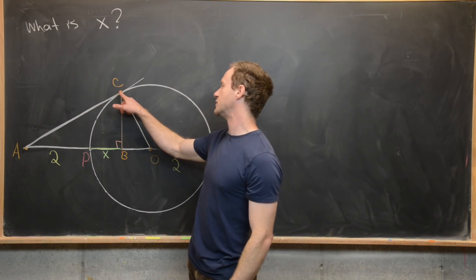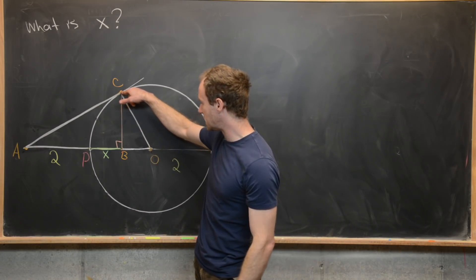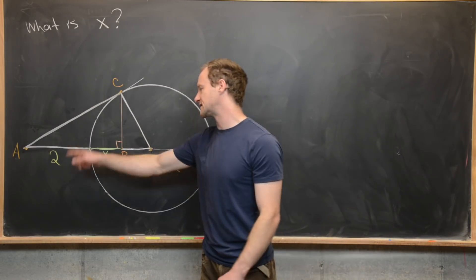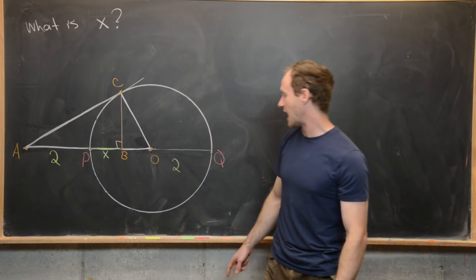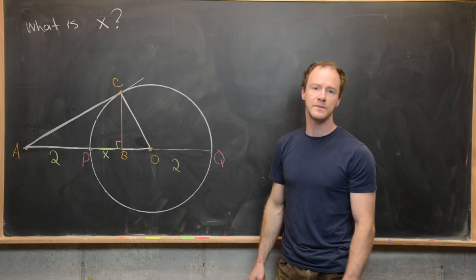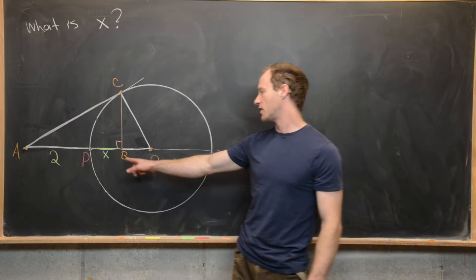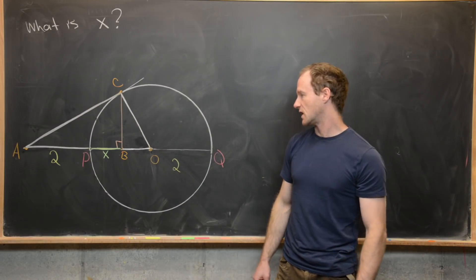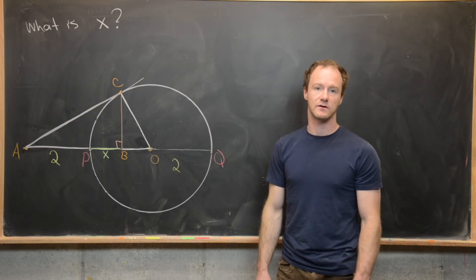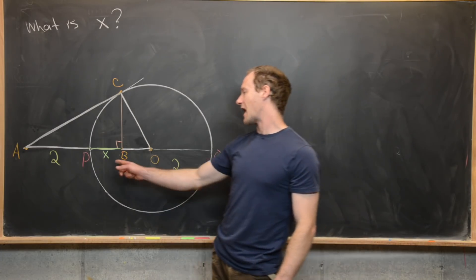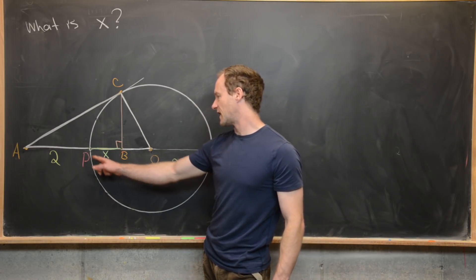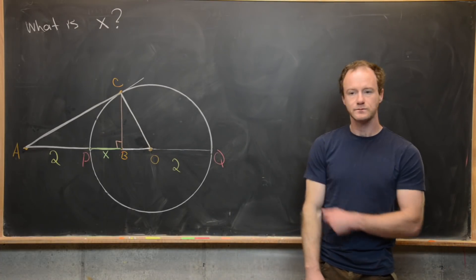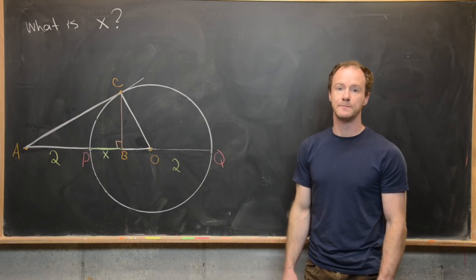Another thing we're going to do is take point C and drop a perpendicular down to line segment AQ, and we're going to call this point B, so that intersects at a right angle. Our goal is to find the length of line segment X, shown there in green.